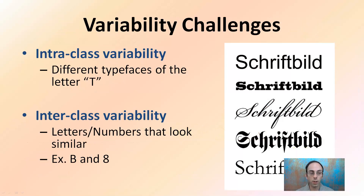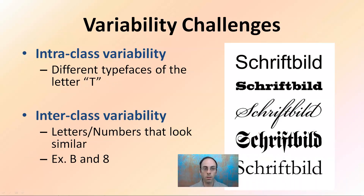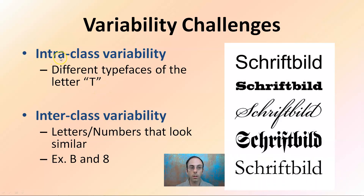There's variability — intra and interclass variability. Intra-class variability: different typefaces of the letter T would be intra-class. Interclass variability would be letters and numbers that look similar — for example, the letter B and the number 8 are interclass variability; they look very similar. Versus the letter T in different typefaces, which is intra-class variability. These are some of the challenges when classifying certain things.